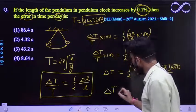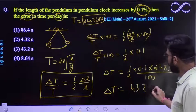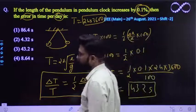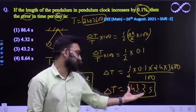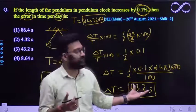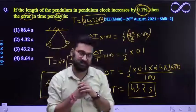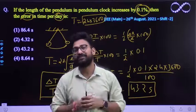If you solve this further, you will be getting approximately 43.2 seconds, your error will come out. So in the entire day, this much error will come, this much seconds of error will come, if you increase the length by 0.1 percent. I hope this question is clear to everyone. Thank you.